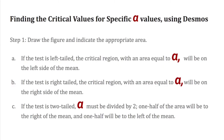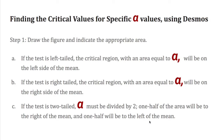The first step is to draw the figure and indicate the appropriate area. Before you find the appropriate area, consider the following: if the test is left-tailed, the critical region with an area equal to alpha will be on the left side of the mean. If the test is right-tailed, the critical region with an area equal to alpha will be on the right side of the mean. If the test is two-tailed, divide the value of A by 2 — one half of the area will be on the right of the mean, and one half will be to the left of the mean.